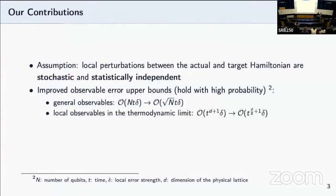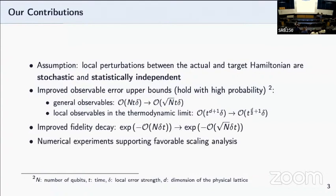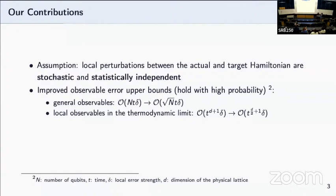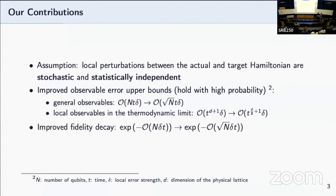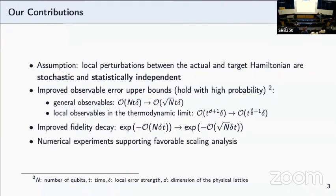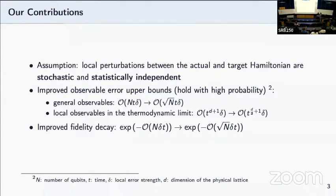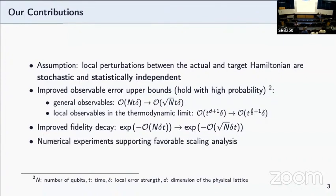Next, we also look at the local observable setting in the thermodynamic limit, and we're able to show an almost quadratic improvement with respect to time. So we have t to the d over 2 plus 1 compared to previous best known result derived by Trivedi et al. of t to the d plus 1, where d is the dimension of the physical lattice space that qubits live on. Applying these results to the fidelity decay setting, we're able to show a non-exponential decay where the fidelity decays with respect to square root of n rather than linear in n. Lastly, we provided numerical experiments to support these favorable scaling analyses.